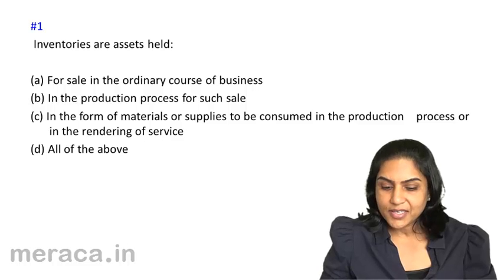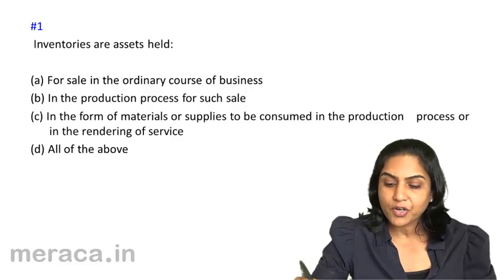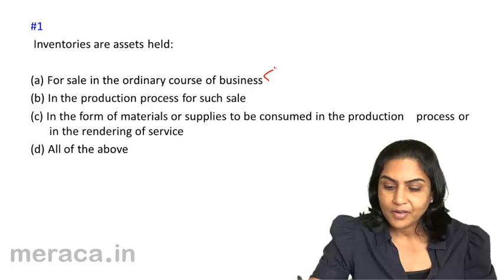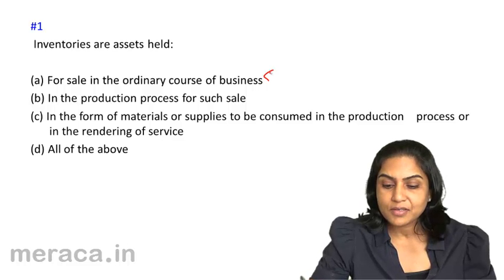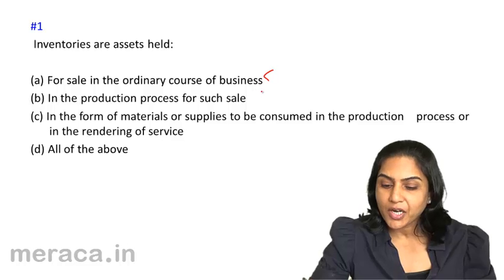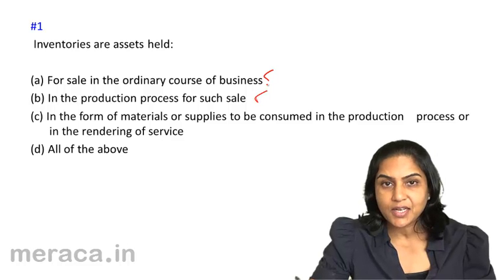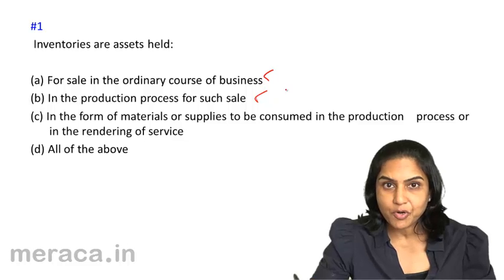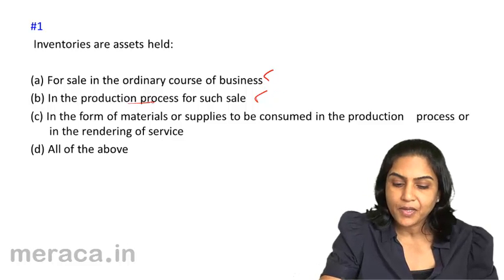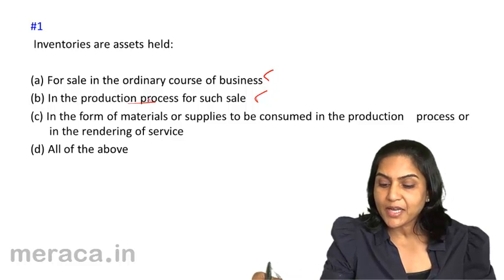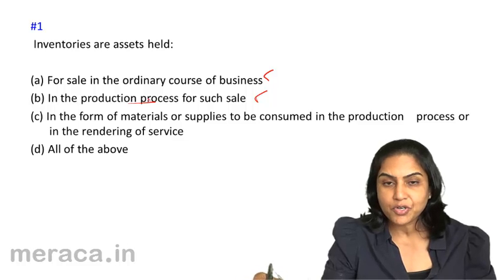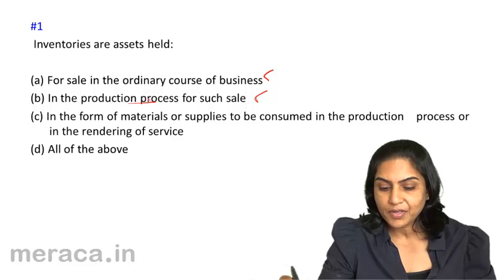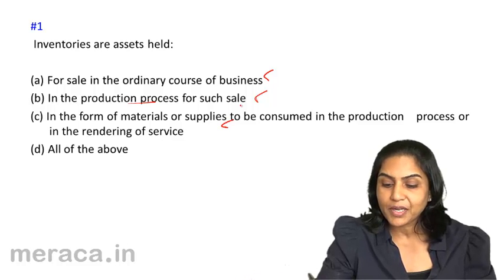Inventories are assets which are held in the ordinary course of business — this is referring to finished goods. In the production process for such sale, we are referring to the work in progress in the production process. In the form of materials or supplies to be consumed in the production process — they are talking of the raw materials.